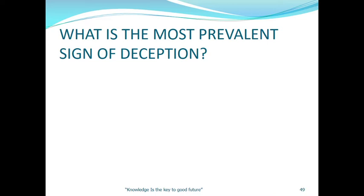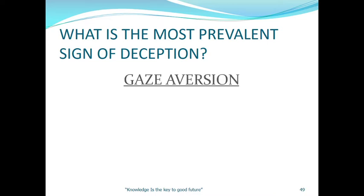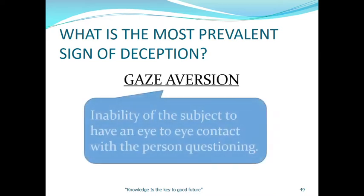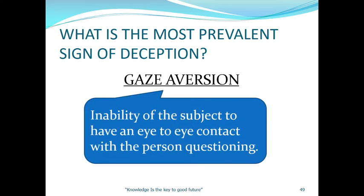What is the most prevalent sign of deception? Gaze aversion. This is the inability of the subject to have eye-to-eye contact with the person questioning them — they cannot maintain eye contact.